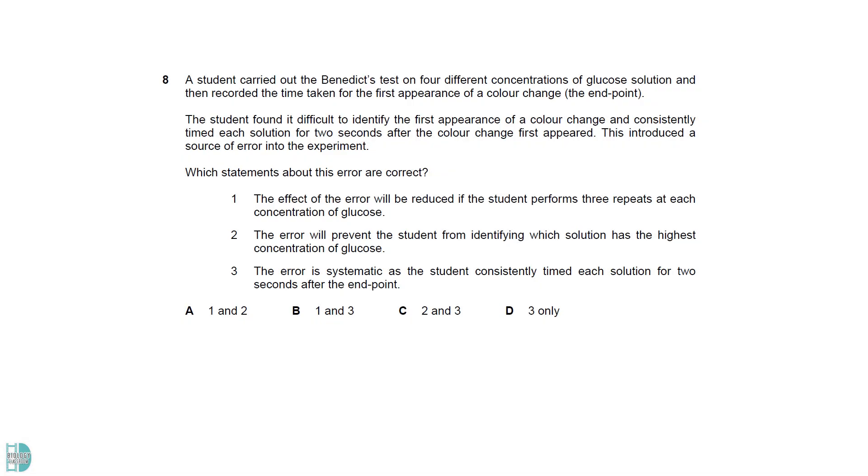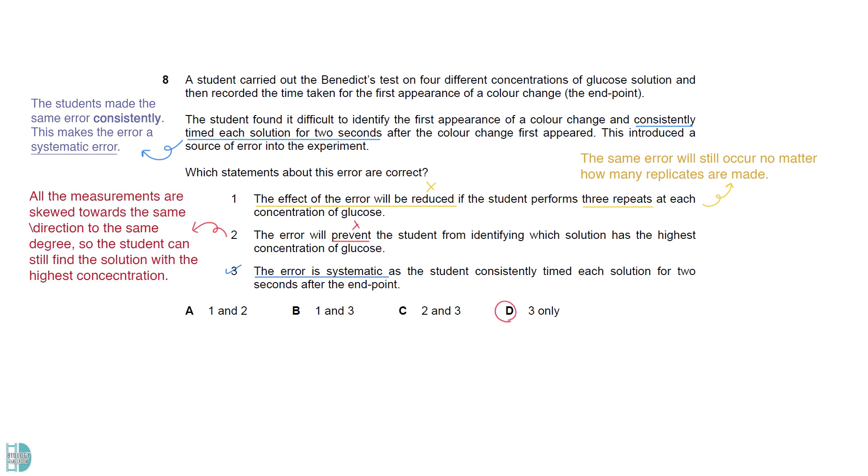Even though the error described here sounds like a random error, the students make the same error consistently. This makes the error a systematic error. So three is correct. We can't reduce the effect of systematic errors by making more replicates as the error will still occur in the same way no matter how many times we repeat the experiment. Since the error is consistent, the student would not have a problem finding the solution with the highest concentration as all the measurements are skewed towards the same direction to the same degree.